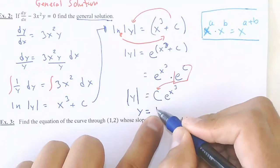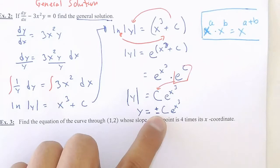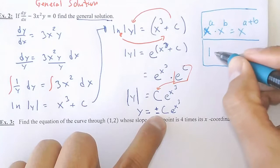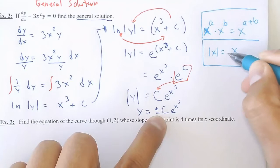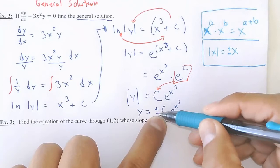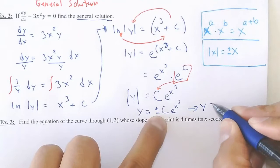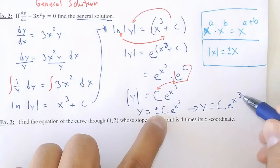I'm able to go from |y| = C · e^(x³) to just y = C · e^(x³). Some of these problems are going to come up in the homework; I know there will be questions and we'll deal with them as they come.